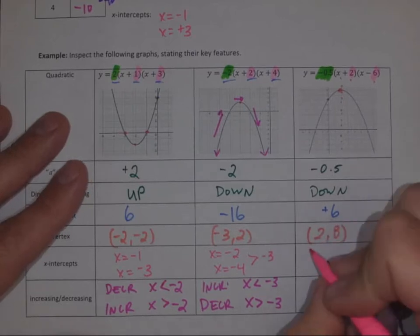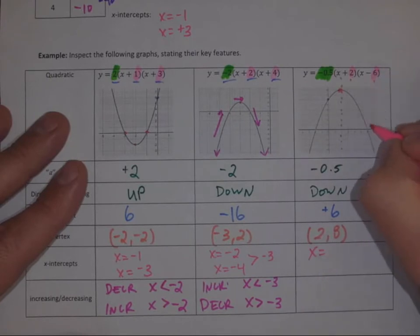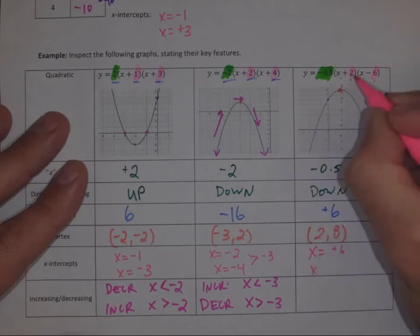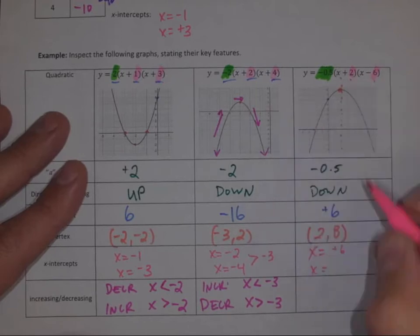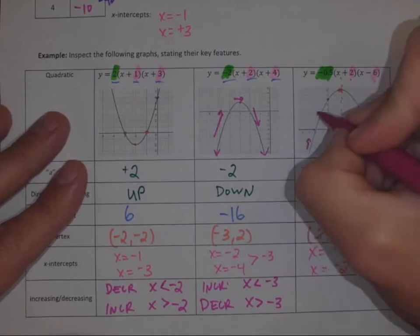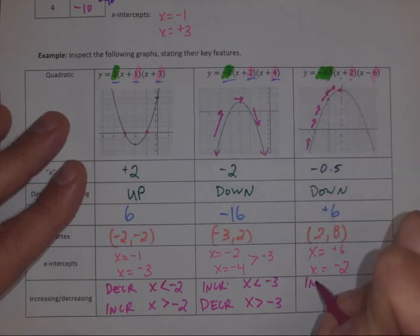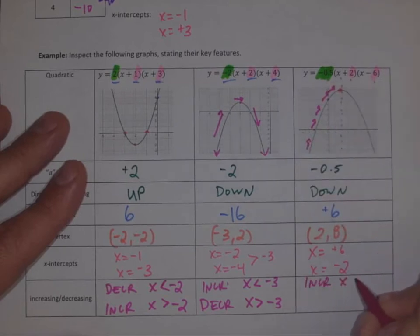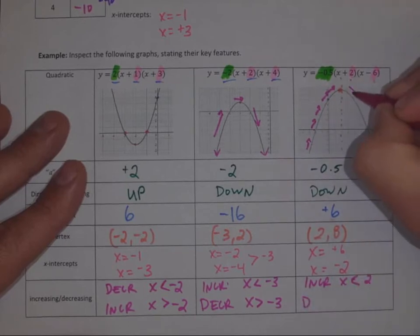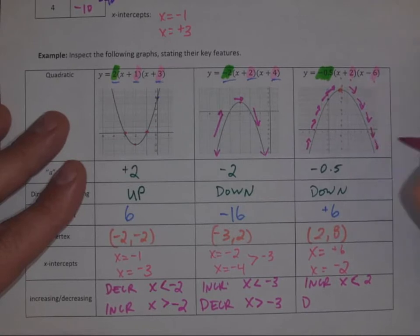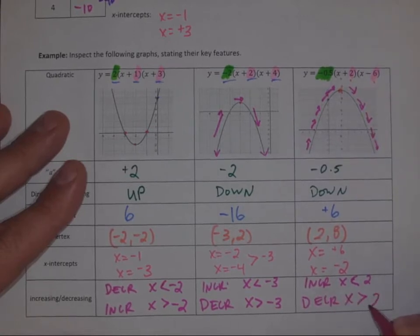Looking at the x-intercepts: we have a negative six in brackets, so one x-intercept is positive six; we have a positive two, so one x-intercept is negative two. Opening down, it goes uphill — increasing when x is less than two — and then decreasing once we pass the vertex, when x is greater than positive two.